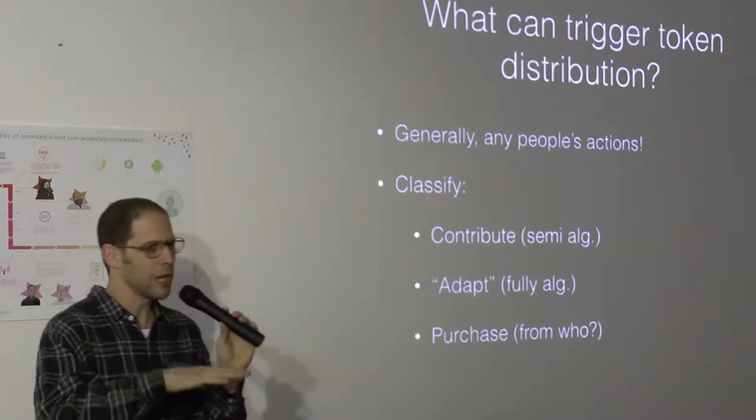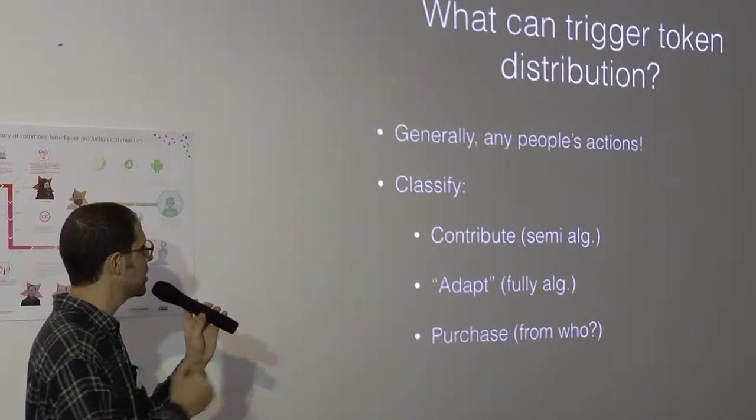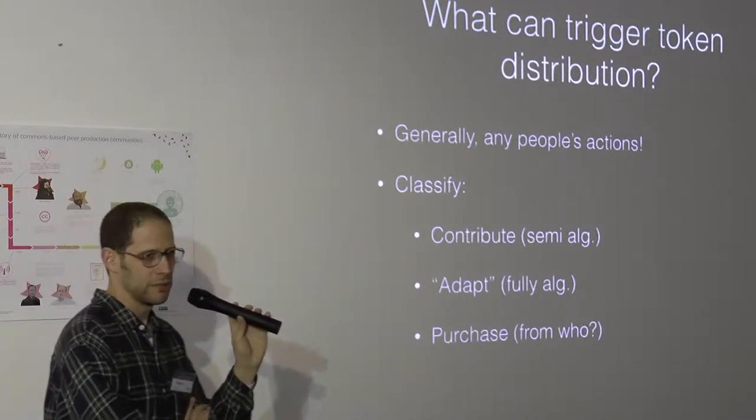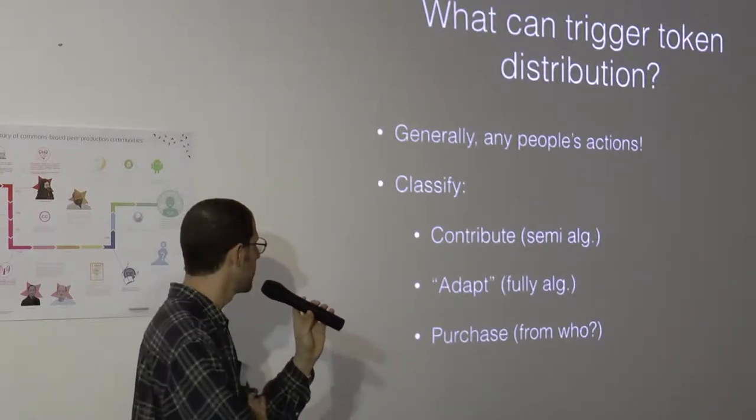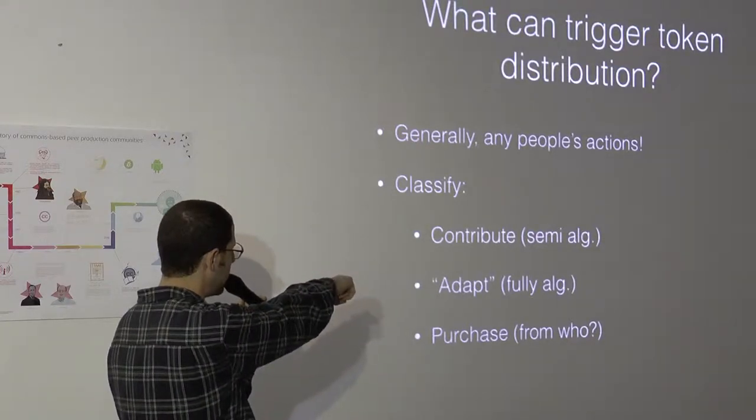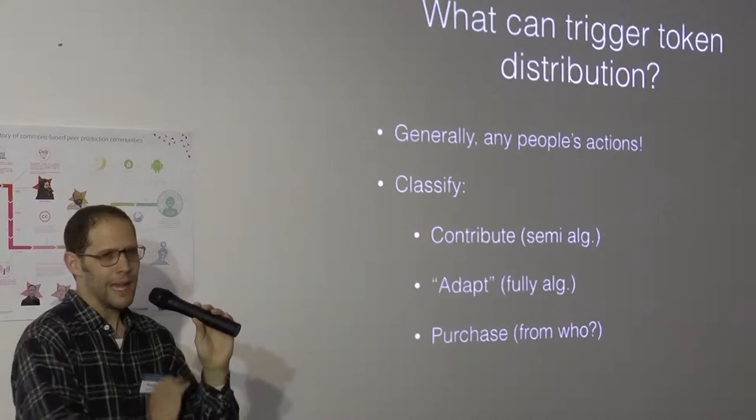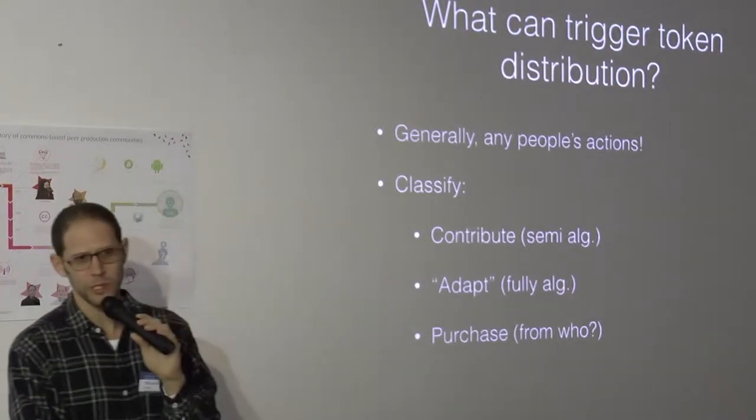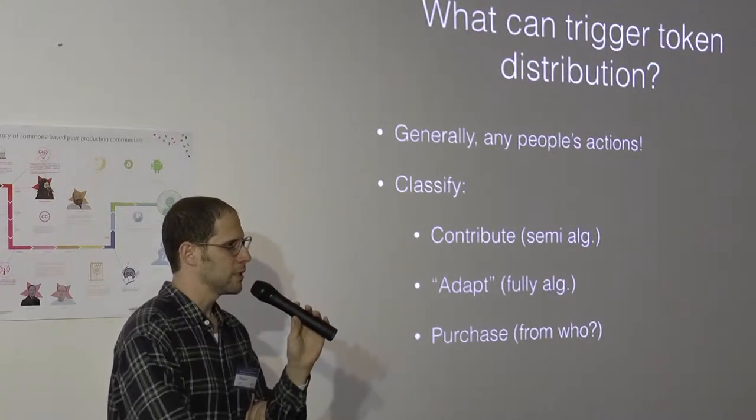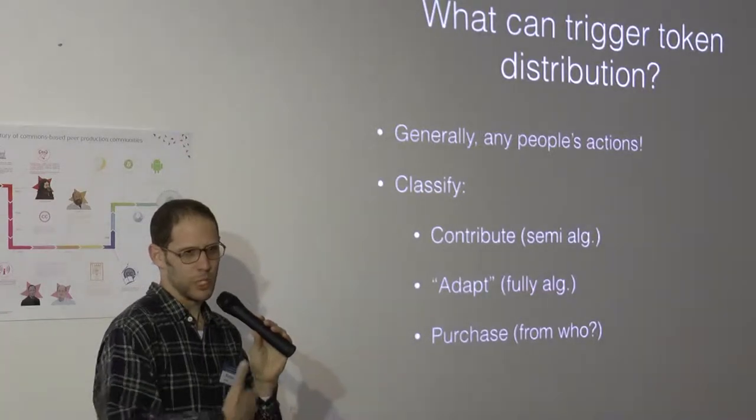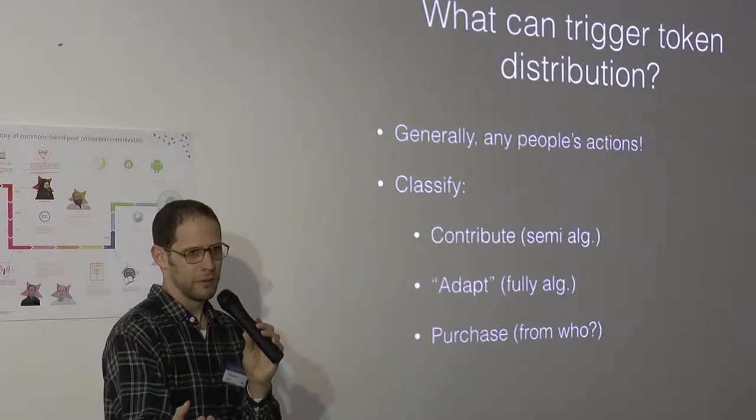So what can trigger token distribution? We are talking about millions of people cooperating on some actions. We want to assign value for each contributor. So what kind of actions trigger this assigning of value? Generally, any action that people make should be triggering, or can trigger, distribution of tokens. But let's classify these kind of triggers. Actually, Bitcoin only covers number two. The most generic action that you can assign tokens for is just contribution. Like Alice is making a very valuable contribution to build the network. And we as a community, as a collective, we want to assign value for her contribution. Now this is a semi-algorithmic protocol, because it has to involve the input of the community. After all sum of feedbacks of the community, you can take an algorithm and sum it up to give you a number.